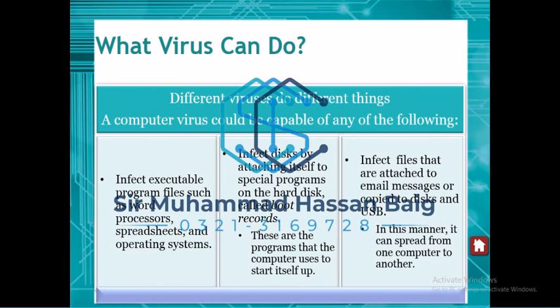Third, a virus can spread through infected files attached to email. When you upload a file for attachment, if it is a virus or executable file, email providers like Gmail will warn you and ask you to upload it to Drive instead. But if the virus is smart enough to bypass Google's security, it will spread via email when the recipient downloads it.